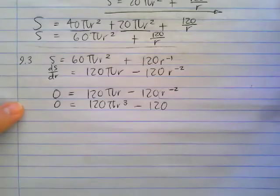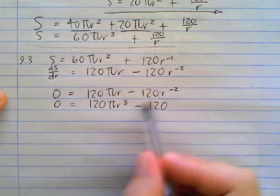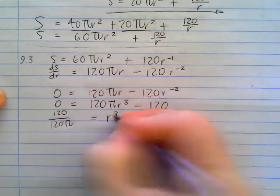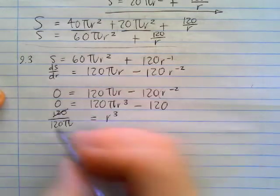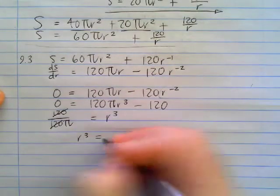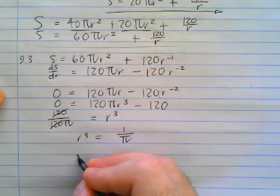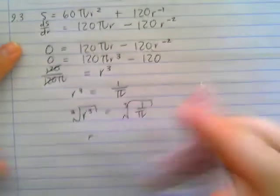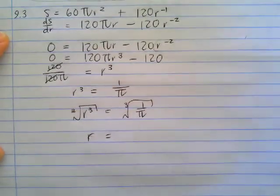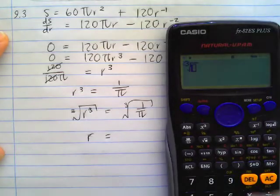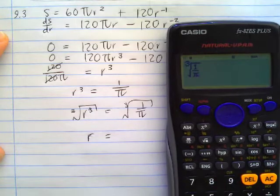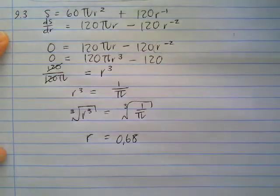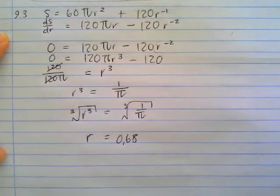If we've made it equal to 0, we can now solve for that r by taking the 120 across and dividing by 120 pi. We are now going to be left with r cubed. Before we cube root both sides, that 120 and that 120 could cancel. So r cubed is 1 over pi. At this stage, if we cube root both sides, we're going to get r equal to our answer. Here's where we grab our calculator and we're going to work out the cube root of 1 over pi. And we're going to get 0.68. So there's the radius that's going to ensure that we get the least amount of paint used for our necklace.